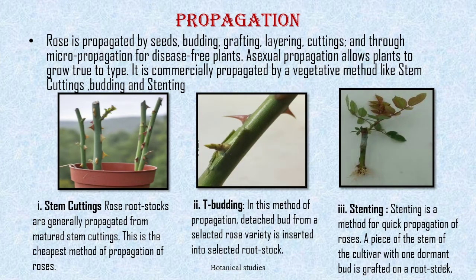Propagation: rose is propagated by seeds, budding, grafting, layering, cutting, and through micropropagation for disease-free plants. Asexual propagation allows plants to grow true to type. It is commercially propagated by vegetative methods like stem cutting, budding, and stenting. Vegetative propagation by stem cutting: rose rootstocks are generally propagated from matured stem cuttings. It is the cheapest method of propagation and is particularly adapted for multiplying miniature, polyantha, climber, and rambler roses.